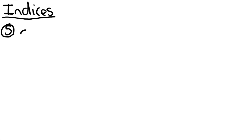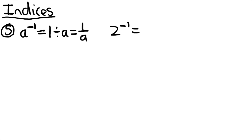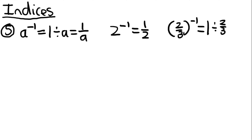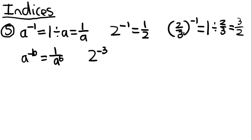The fifth law: A to the power of minus 1 equals 1 divided by A, which is 1 over A. So 2 to the power of minus 1 equals one half. Also, 2 over 3 to the power of minus 1 equals 1 divided by (2 over 3), and if you remember how division works with fractions, you flip it, so this becomes 3 over 2. More generally, A to the minus B equals 1 over A^B. So 2 to the power of minus 3 equals 1 over 2 cubed, which equals 1 over 8.